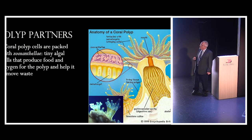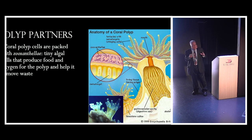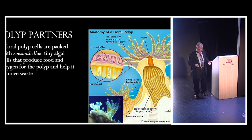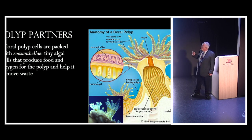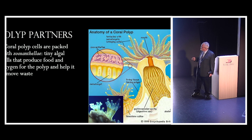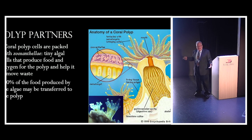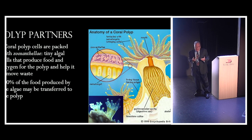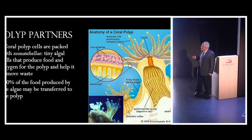These algae are called zooxanthellae — they are individual algal cells that live inside the polyp and can photosynthesize. They can produce food like a plant can, and that food is what keeps the polyp going. They also help it recycle oxygen and remove waste, because one byproduct of photosynthesis is oxygen. About 90% of the food produced by these zooxanthellae is passed on to the polyp, so they're vital for keeping it alive.